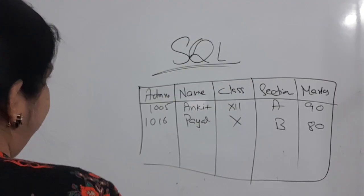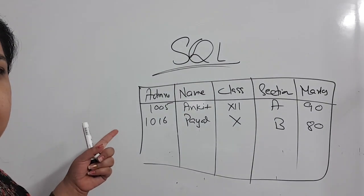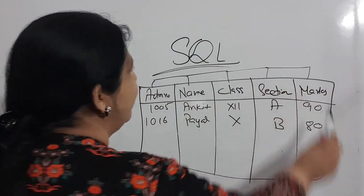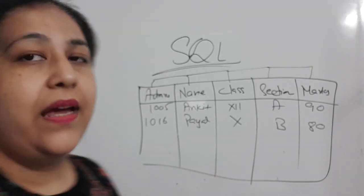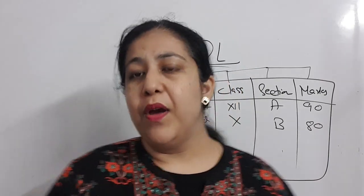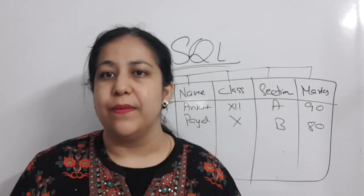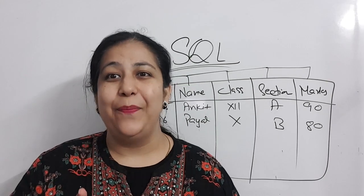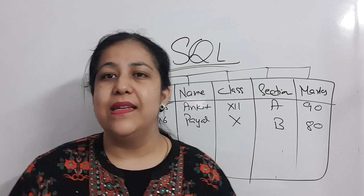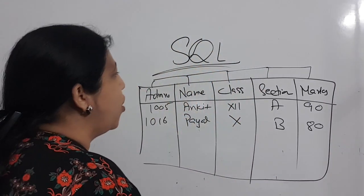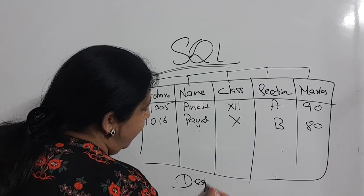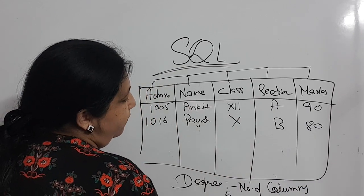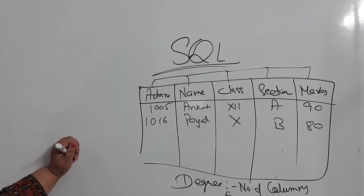There are three things that I always tell you that you should know about every table. First: what is the degree of this table? The degree is the number of columns in your table. Always remember that. So, the degree here is 5, because we have 5 columns in this table.